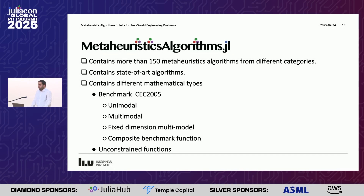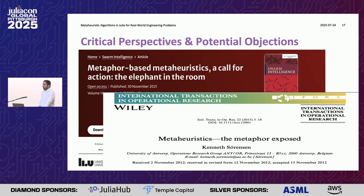We developed MetaheuristicAlgorithms.jl, which contains more than 150 metaheuristic algorithms from different categories, including state-of-the-art algorithms and different mathematical types. We have added the CEC 2005 benchmark, which contains different function types: unimodal, multimodal, fixed-dimension multimodal, and composite benchmark functions. We have also added benchmarks for unconstrained real-world engineering problems, containing around nine functions.